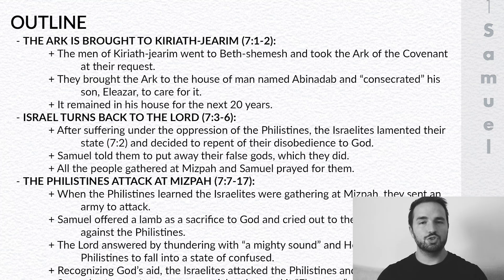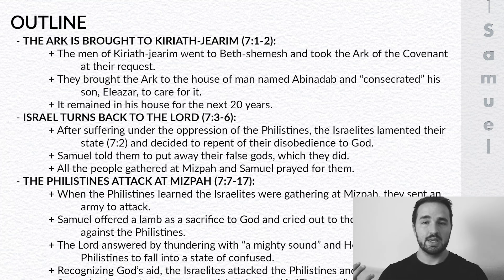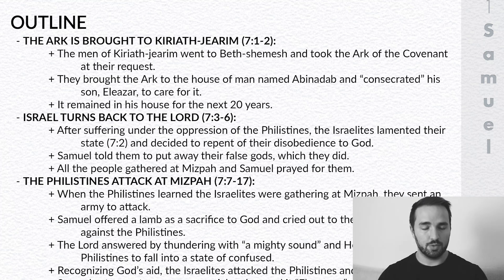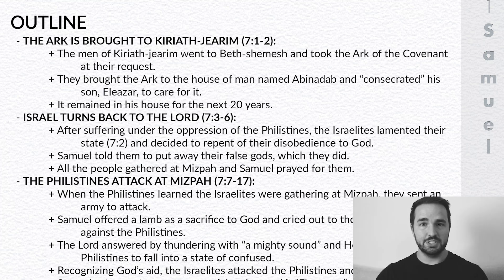Moving on to verses 3 through 6: Israel turns back to the Lord. The Israelites had been oppressed by the Philistines and were tired of it, so they finally decided to do the right thing — to repent of their sins and turn back to God. Samuel told them they needed to put away their idols and worship only the true God who had always taken care of them. The people gathered at Mizpah and Samuel prayed for them there.